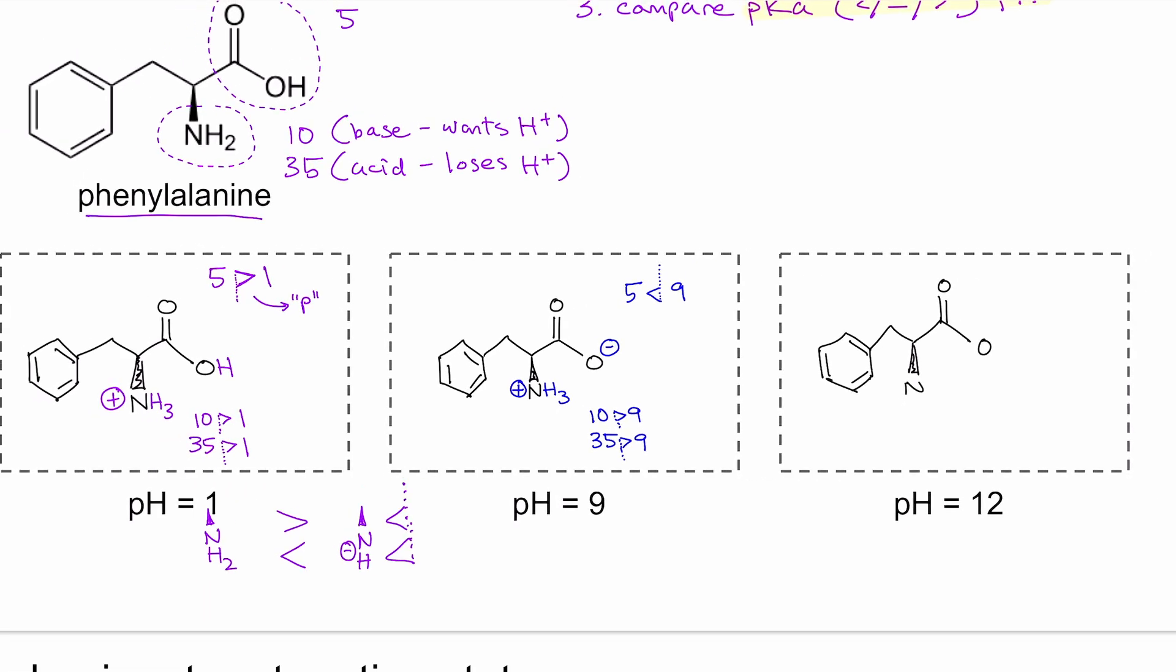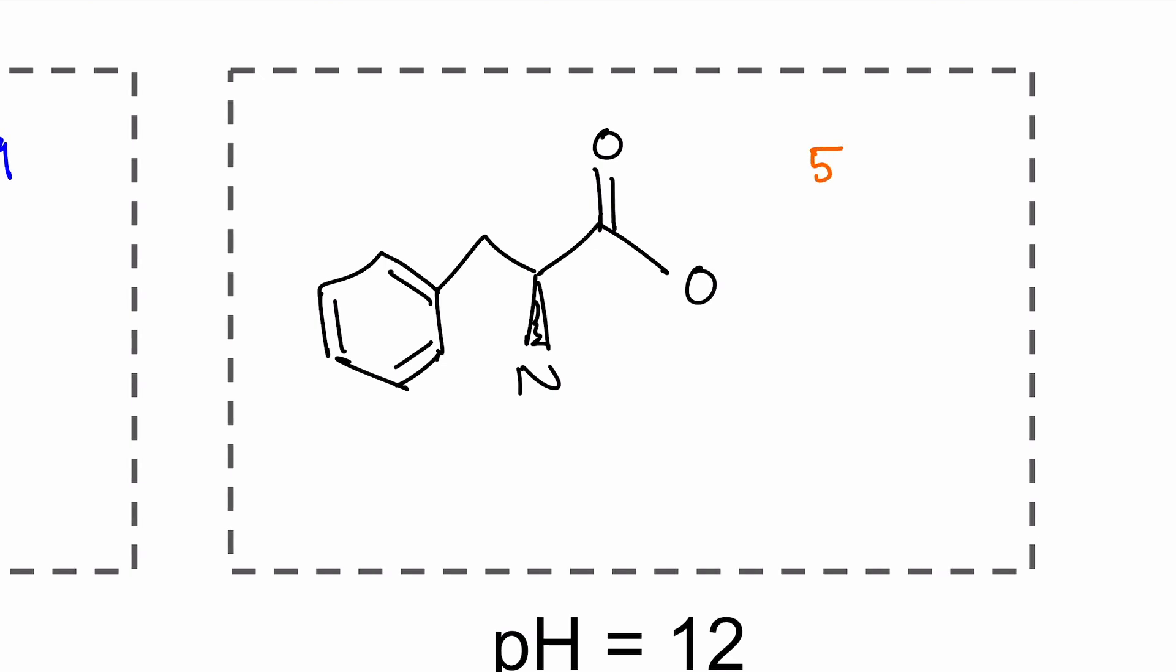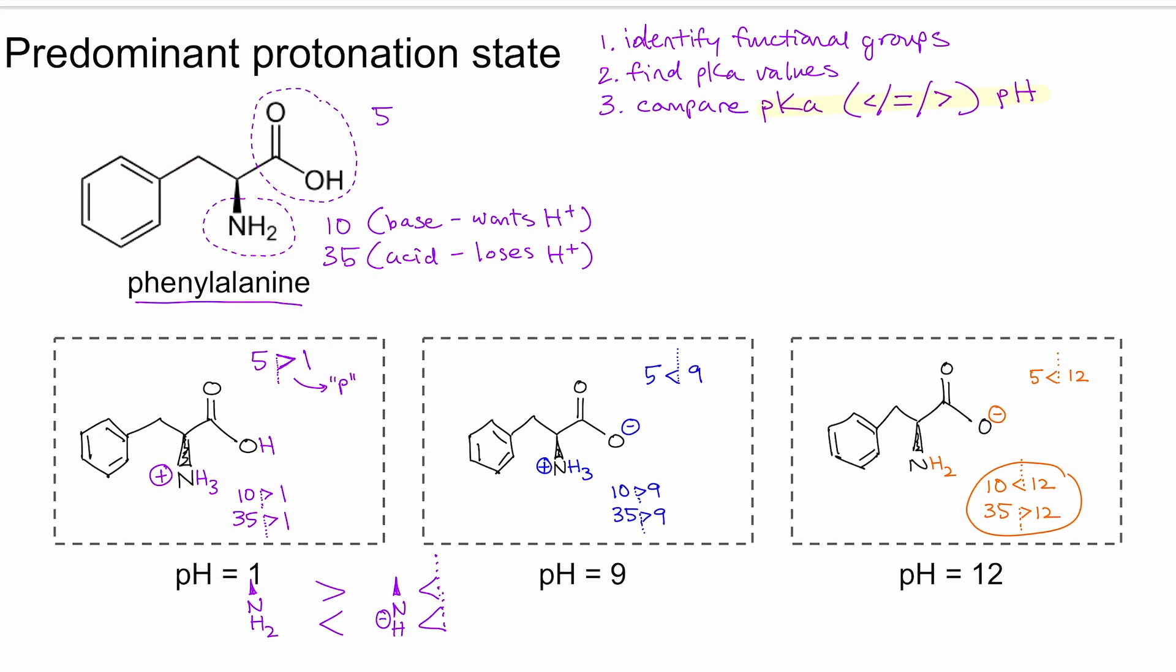Now for a pH of 12, let's do the same things. For carboxylic acid, 5 is less than 12, so carboxylic acid gets deprotonated. And for amine, 10 is less than 12, and 35 is more than 12. Since we have this mismatch between is it deprotonated, is it protonated, we can kind of think of these two conditions canceling out each other, and the amine would just stay a neutral amine. And we're done.